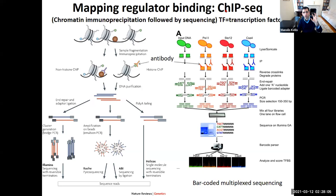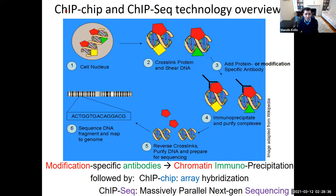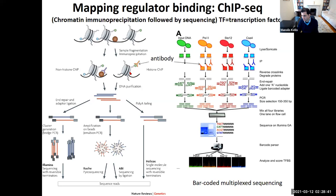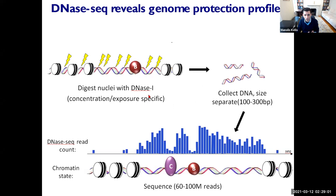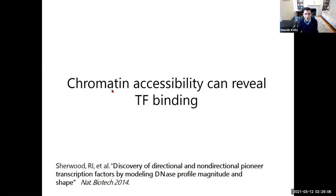This is ChIP-seq technology — chromatin immunoprecipitation followed by sequencing. 'Immunoprecipitation' comes from using antibodies (part of the immune system) to precipitate DNA. You can use this to map across the genome all locations with a particular histone modification or where transcription factors are bound, then map sequences back to figure out their genomic origin.